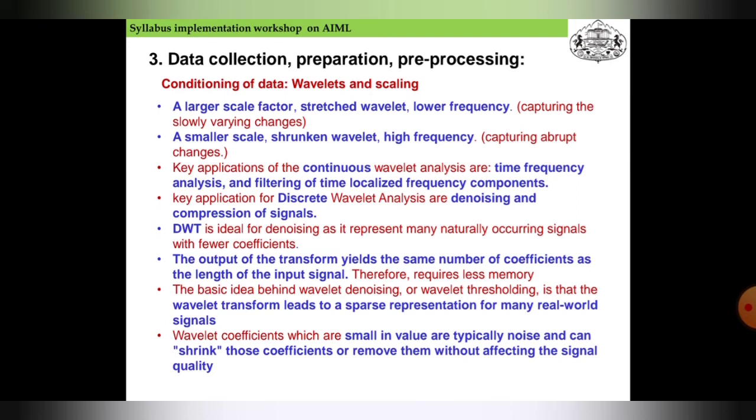The output of the transform yields the same number of coefficients as the length of the input signal, therefore it requires less memory. The basic idea behind wavelet denoising and wavelet thresholding is that the wavelet transform leads to sparse representation for many real-world signals. The wavelet coefficients which are small in value are typically noise and can be shrunk or removed without affecting the signal quality.